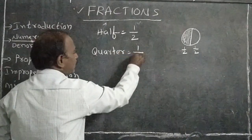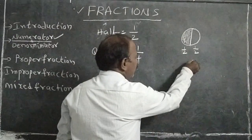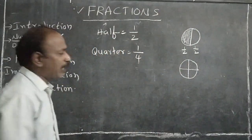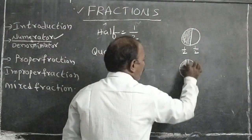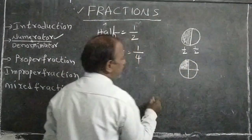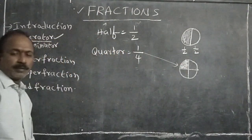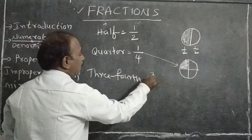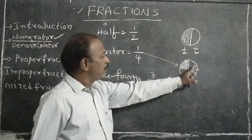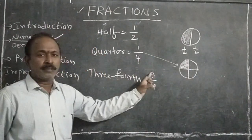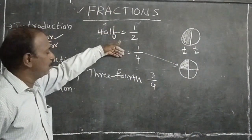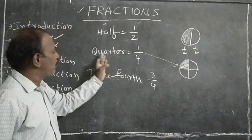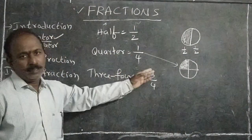Quarter is 1 by 4. Here, how many equal parts are there totally? 4 equal parts. Among these 4 equal parts, only one part is shaded. So this is 1 by 4. Three-fourths is 3 by 4 — the unshaded region represents three-fourths. So: half is 1 by 2, quarter is 1 by 4, and three-fourths is 3 by 4.